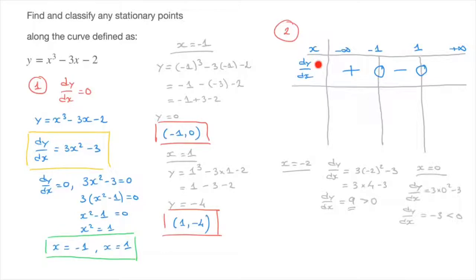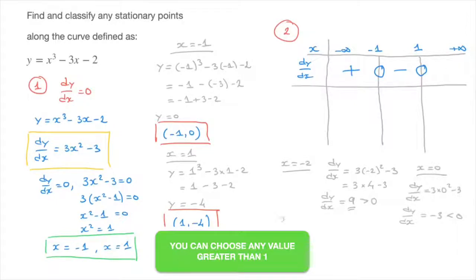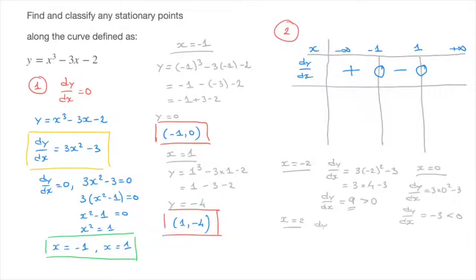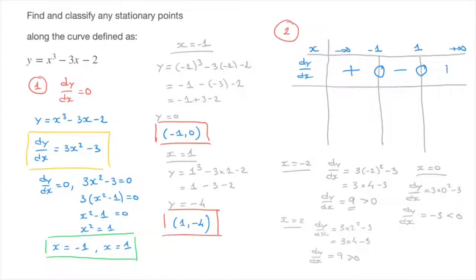Finally, I determine the sign of dy/dx for x values greater than 1. Choosing x equals 2: dy/dx equals 3 times 2 squared minus 3, which equals 3 times 4 minus 3, giving 12 minus 3 equals 9. Since 9 is positive, dy/dx is positive for all x greater than 1, so I add a plus sign. That completes step 2.